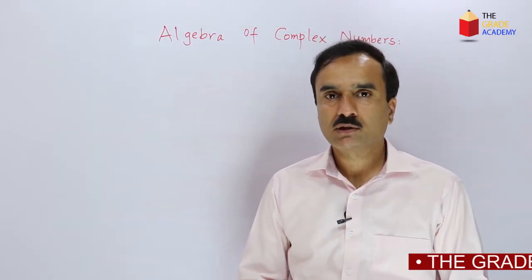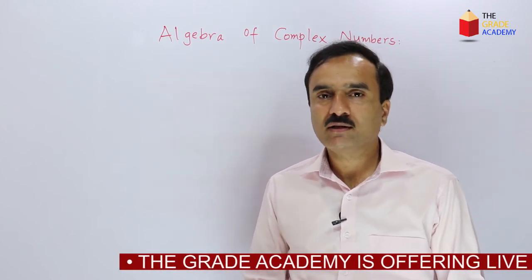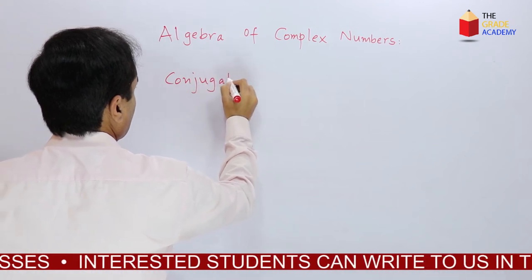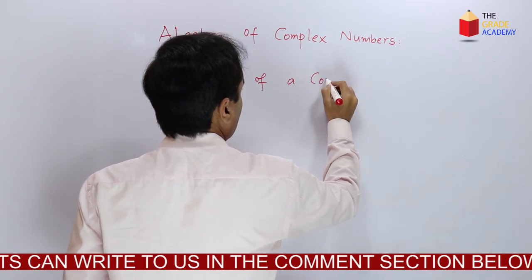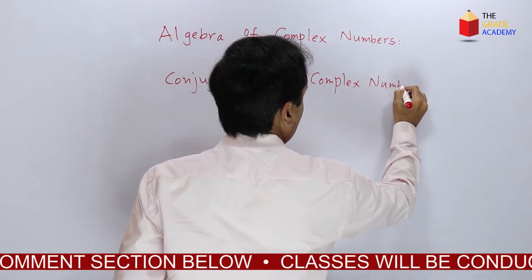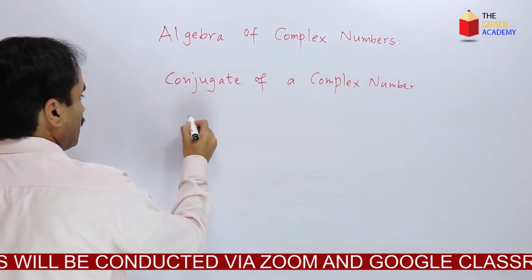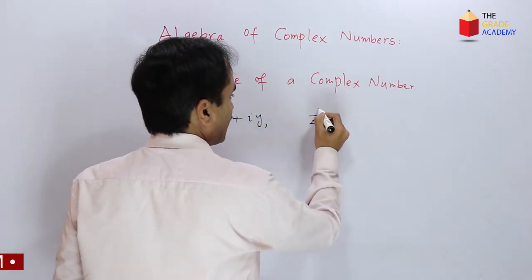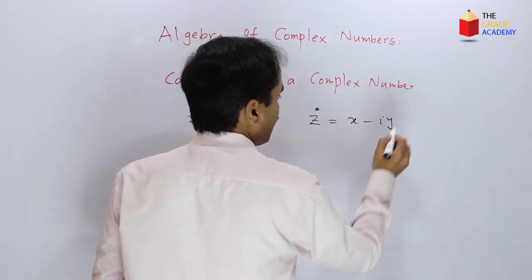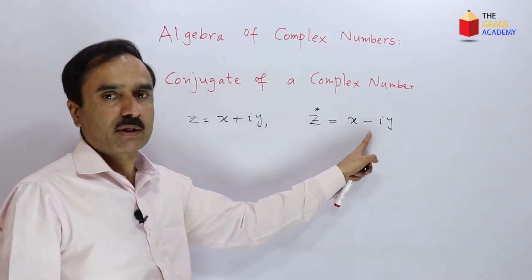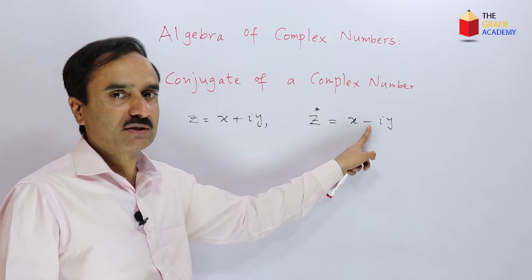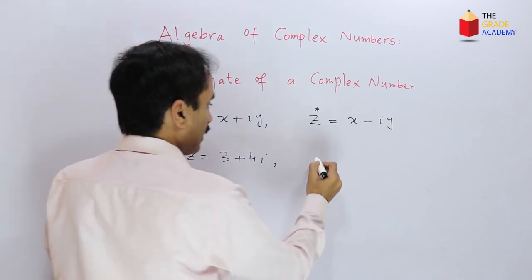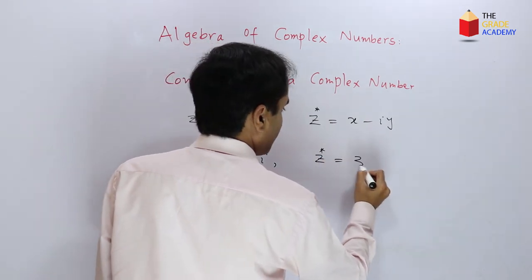We will now move on to the division of complex numbers. But before that we introduce a very important term: the conjugate of a complex number. In general, if we have a complex number z equal to x plus i·y, then its conjugate, represented by z*, is x minus i·y. The complex conjugate is obtained by reversing the sign of the imaginary part. For example, for the complex number 3 plus 4i, its conjugate z* is 3 minus 4i.